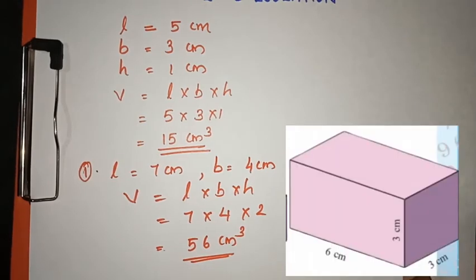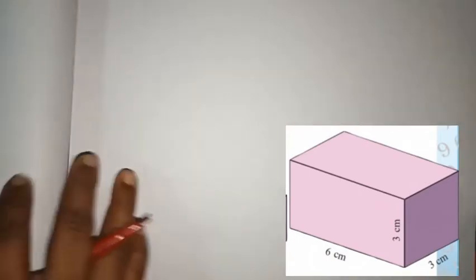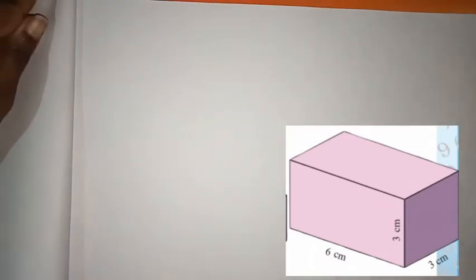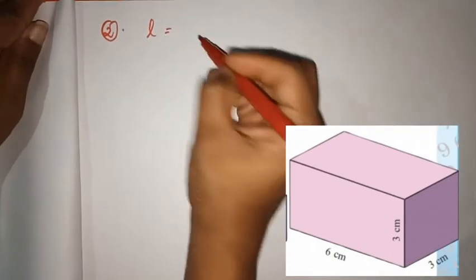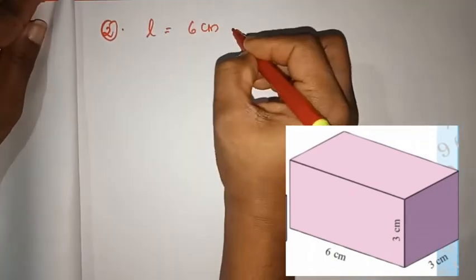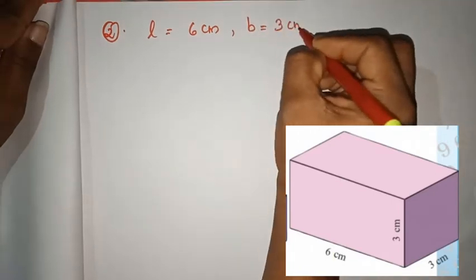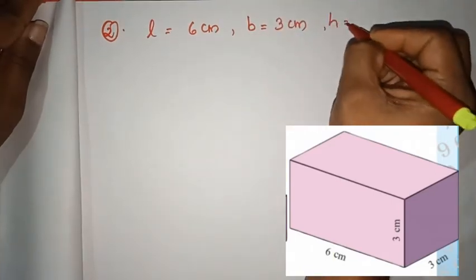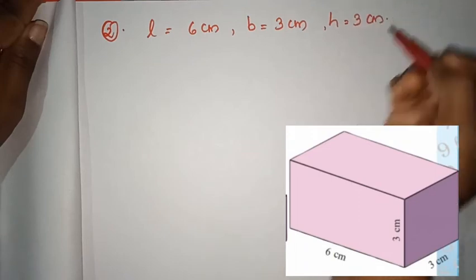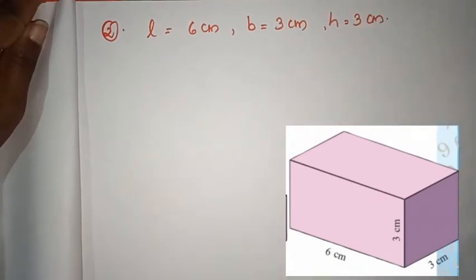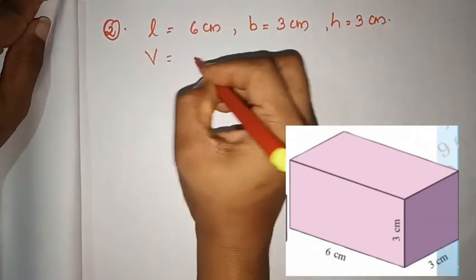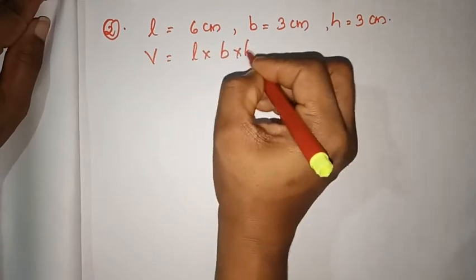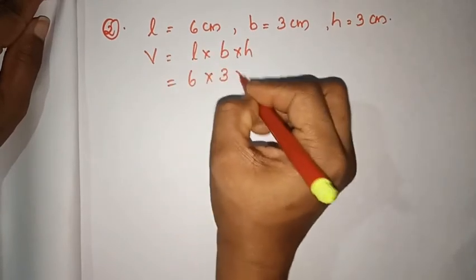What is the next rectangular block? The length is 6 cm, the width is 3 cm, and the height is 3 cm. Volume is equal to length × breadth × height, that is 6 × 3 × 3.